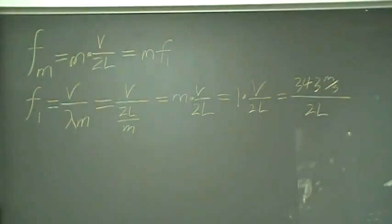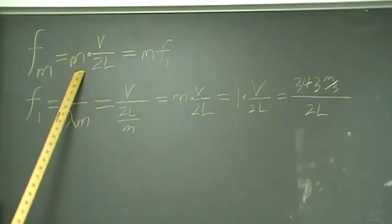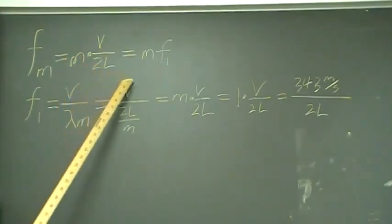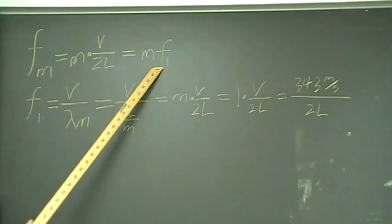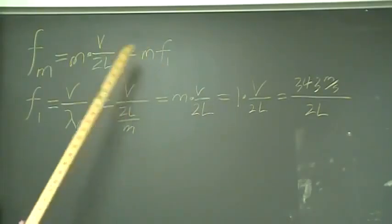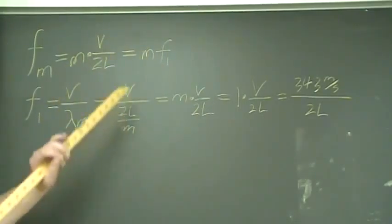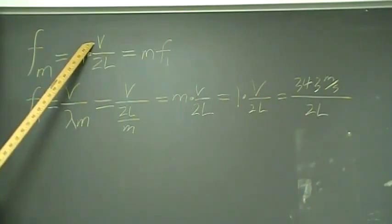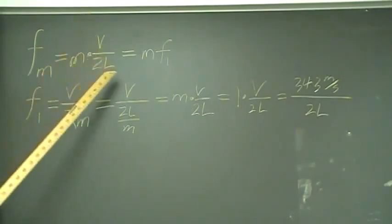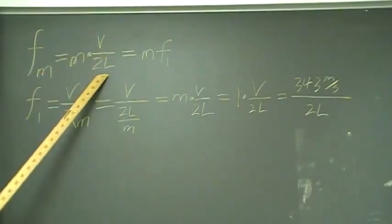The frequency of any harmonic is equal to a multiple of the resonant frequency. And the resonant frequency is equal to the speed of the wave through the medium, in this case air, over twice the length of the tube.